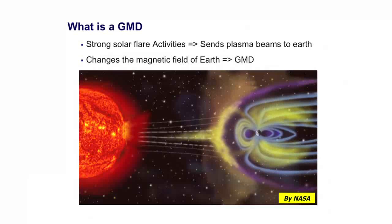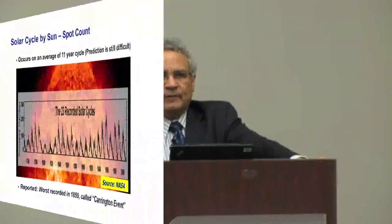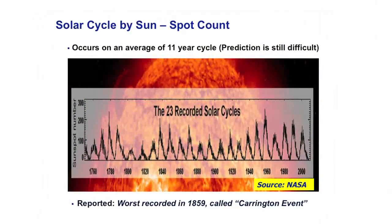The sun has solar activities that occur all the time, except that every 11 years those activities increase in numbers and there is a peak. The solar flares send plasma beams to the earth, and those plasma beams change the magnetic field of the earth. Every 11 years you get higher activity, though higher activity is not necessarily associated with how strong the storm is — it could be more storms but not necessarily very intense ones.